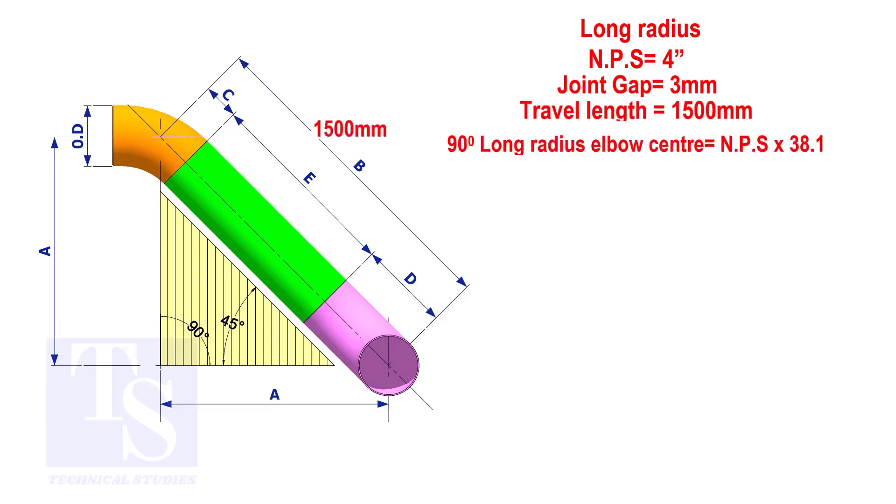The elbow center is the nominal pipe size multiplied by 38.1. So, the elbow center of the 90 degree elbow is 152.4 millimeters.